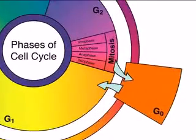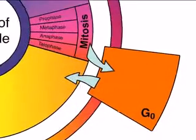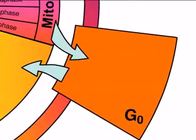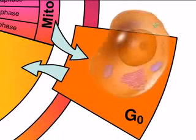Cells begin the cell cycle by entering interphase. In interphase, the cell prepares for division by duplicating DNA. Interphase includes the stages G1, S, and G2.